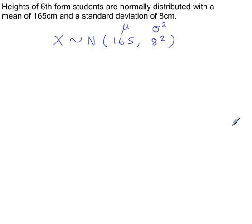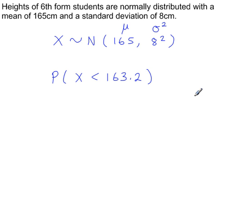If we randomly select one student from this population, we want to work out the probability that the height of the student is less than 163.2 centimetres. The first step is to standardise this value using the standardising formula: z is equal to x minus the mean, over sigma.